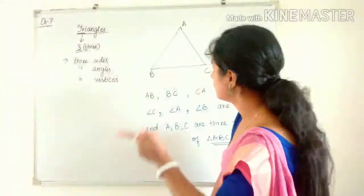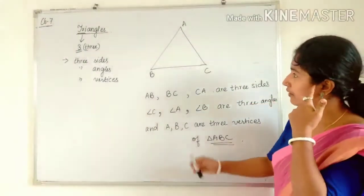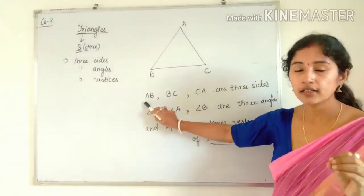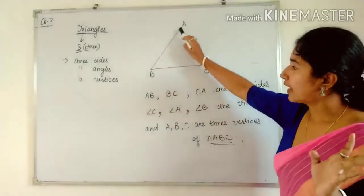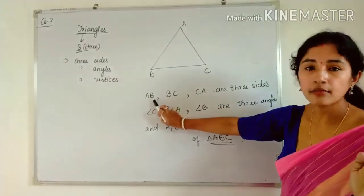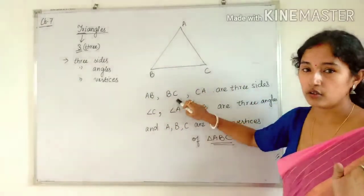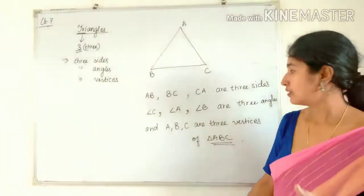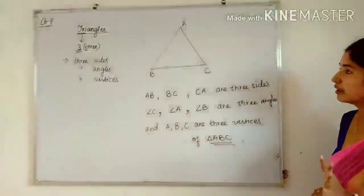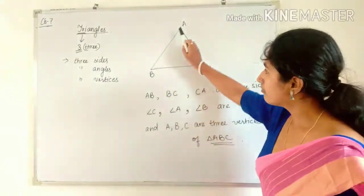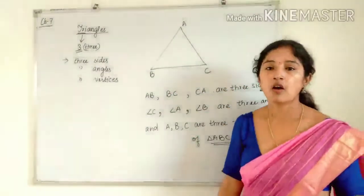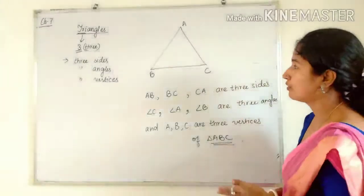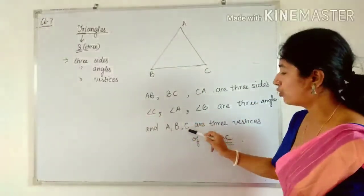So here is a triangle. Sides are represented with two alphabets. Side AB is denoted by two alphabets A and B. Similarly, side BC is denoted as BC — we have to use two alphabets for representing the sides. Similarly, CA will be this side. So these are the three sides. Next, for angles: angle A, angle B, angle C. We have already studied angles in our last chapter, so you know how to represent them.